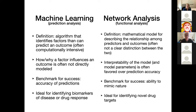How or why a factor influences the outcome is often not directly modeled in machine learning. As machine learning methods mature, many are becoming more interpretable, blurring the line between machine learning and network analysis. We'll hopefully not make it such a stark contrast, and find things that can do accurate prediction and mimic the biology we already know — giving insight into not only what someone's predicted outcome is, but why they are predicted to have that outcome.